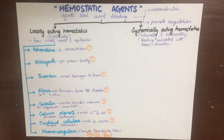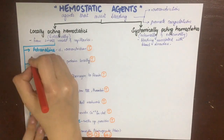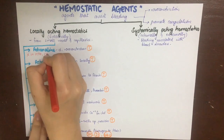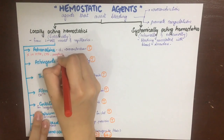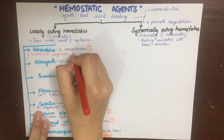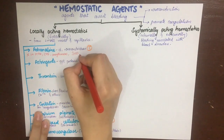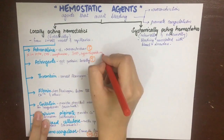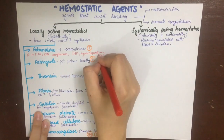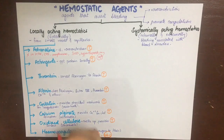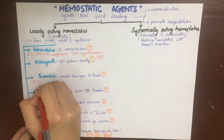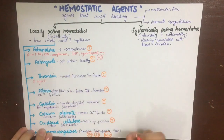Adrenaline should not be given in patients with hypertension, congestive heart failure, cardiac arrhythmias, ischemic heart disease, or uncontrolled hyperthyroidism, because it can precipitate myocardial infarctions. Additionally, thrombin should not be injected.